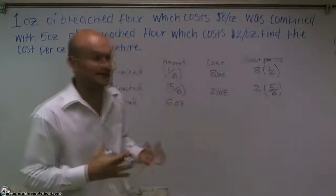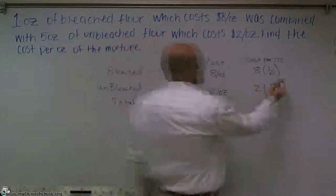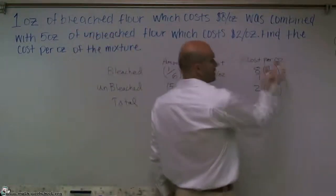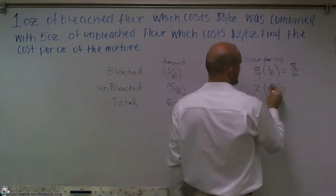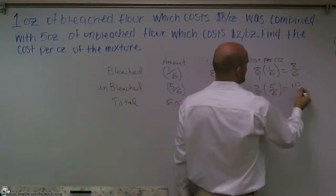So when I multiply those two, that's going to give me my cost per ounce. So here, multiplying my numerator and my denominators across, I get eight-sixths. Here, I'm going to multiply my numerator and my denominators, and I'm going to get ten-sixths.